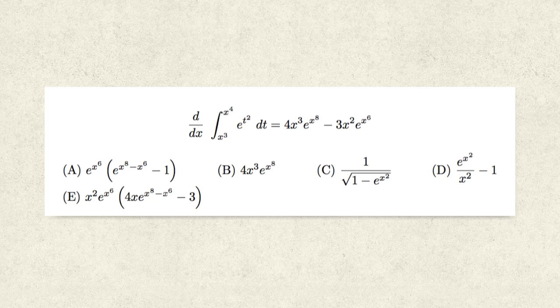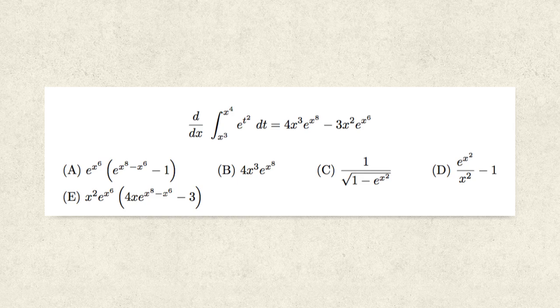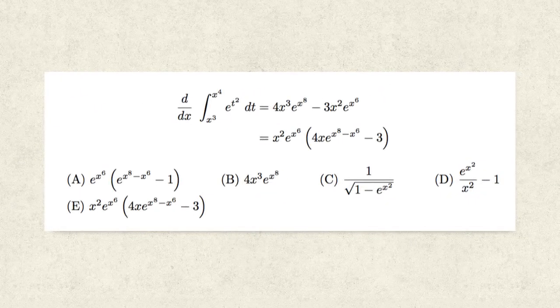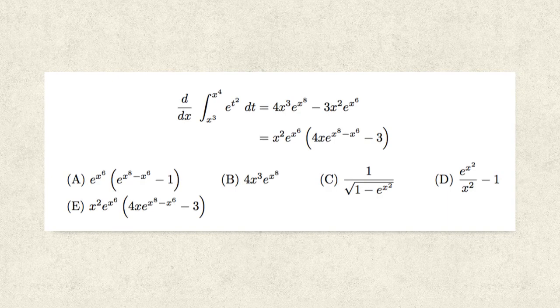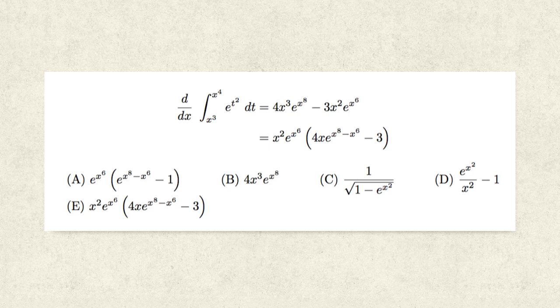So one thing we can try to do is take a look at our answer and see, is it for example factorable? And it turns out that it is. We can take out a common factor of x squared and then also factor out e to the power x to the sixth to get precisely answer choice E.